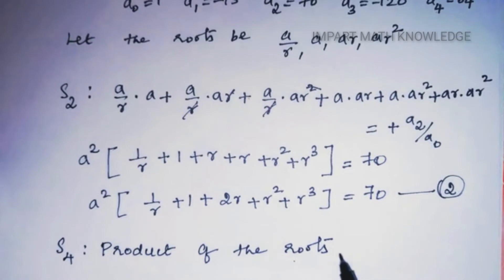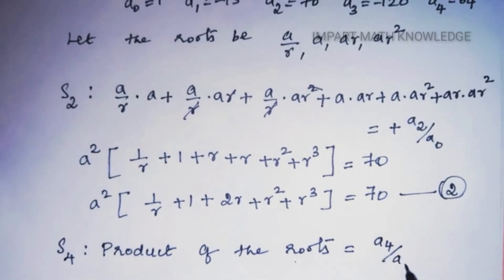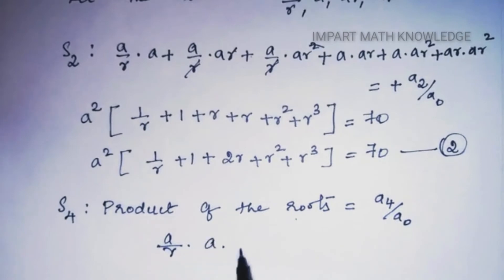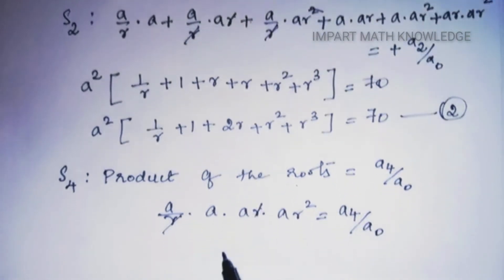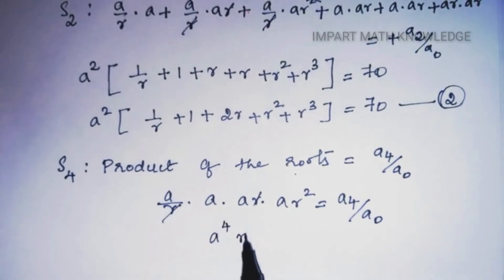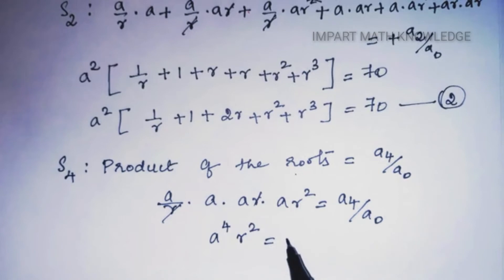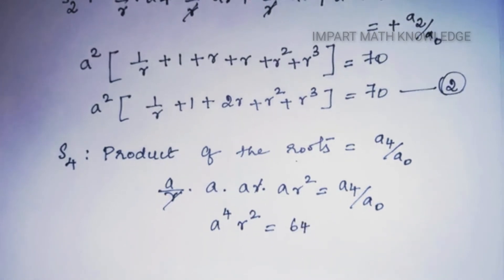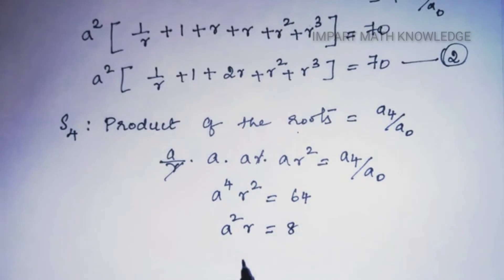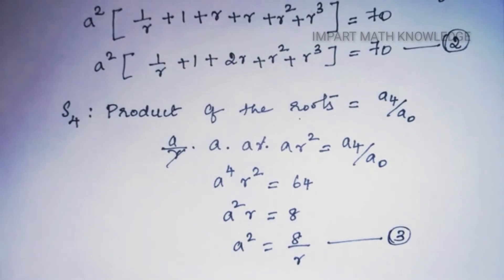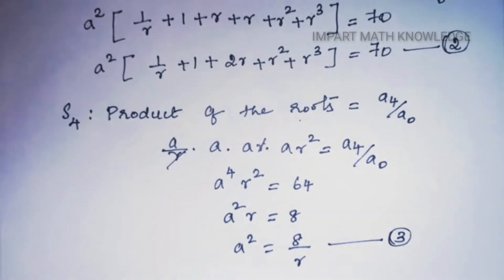For the product of the roots (a4/a0): (a/r)·a·(ar)·(ar²) = 64/1. The r's cancel, leaving a⁴r² = 64. Taking the square root of both sides gives a²r = 8, so a² = 8/r. This is equation 3.